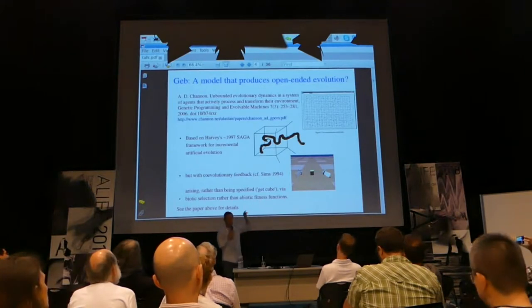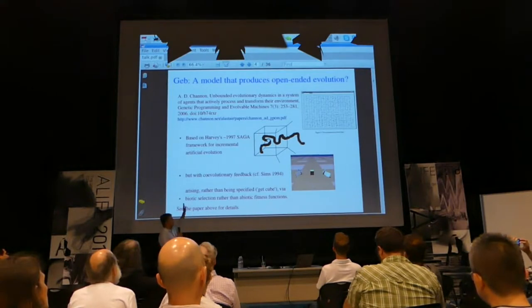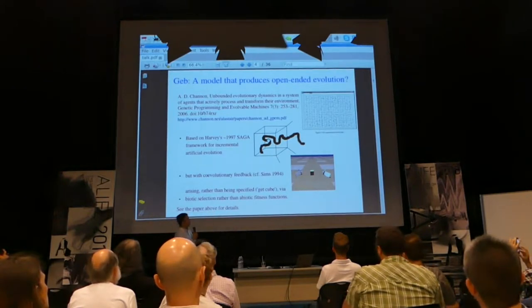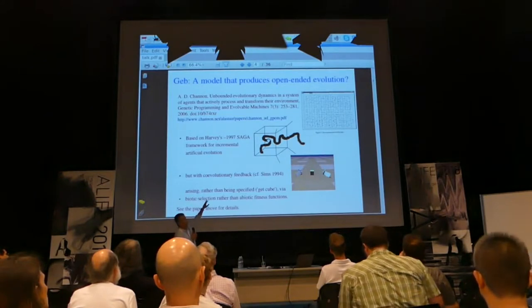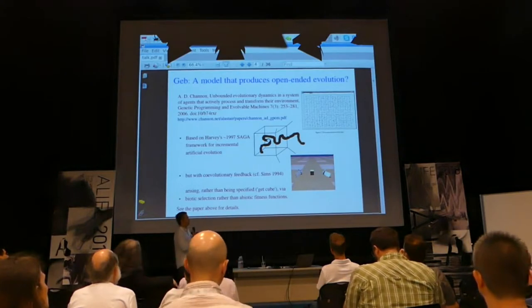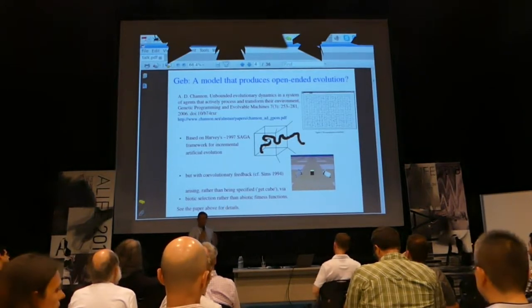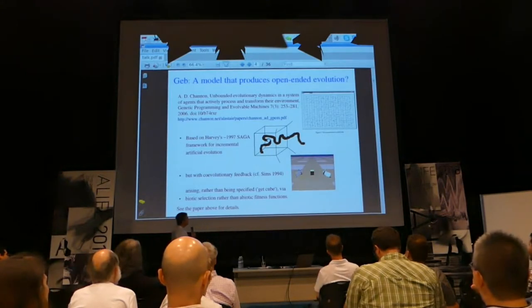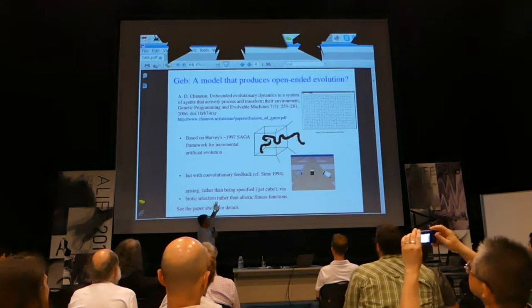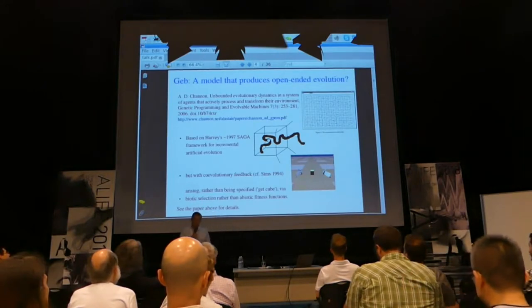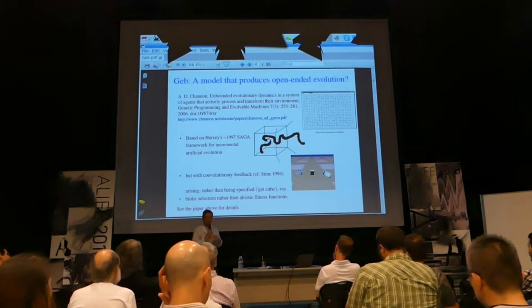Each agent is a little triangle and it can move around. They've got genotypes that map to developmental systems that produce neurocontrollers that produce behavior. The parameters of the evolution are set up a bit like Inman Harvey's SAGA. This work actually began in a master's project in Sussex and then a PhD at Southampton University in the UK. The paradigm is mostly converged species — normally only one or a few species at any one time. I wanted to obviously get co-evolutionary feedback, and the really key thing about this system is that all selection is biotic. I explicitly tried to remove any form of abiotic selection.